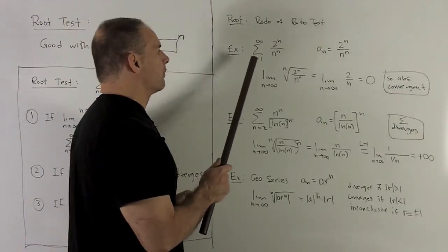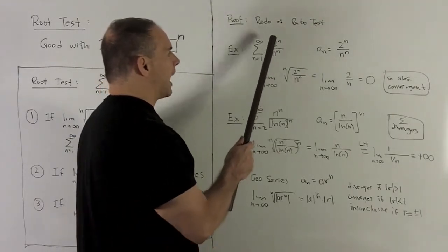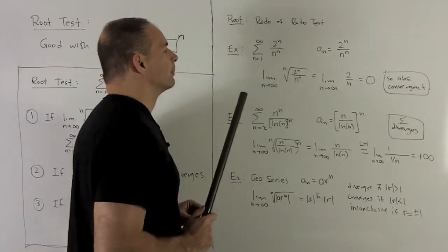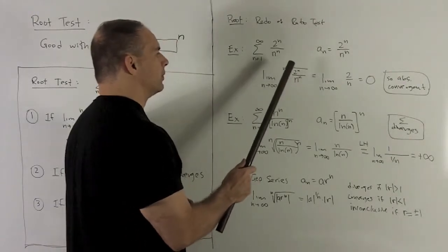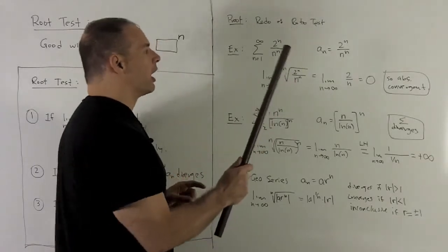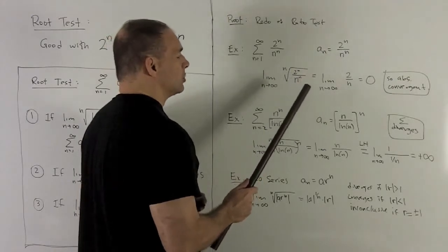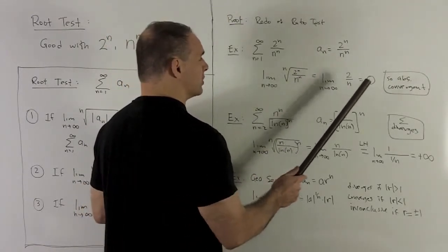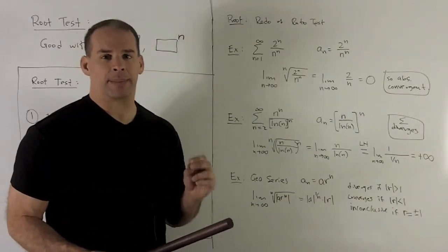Try the series sum from 1 to infinity of 2 to the n over n to the n. We've got powers of n, so the root test will help us strip those off. We take the limit of the nth root of 2 to the n over n to the n, which is the same as raising to the 1 over n power. That turns our exponents from n to n/n = 1, so the limit simplifies to 2 over n. As n goes to infinity, this goes to 0. Since that's strictly less than 1, we have absolute convergence.